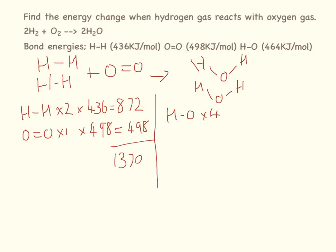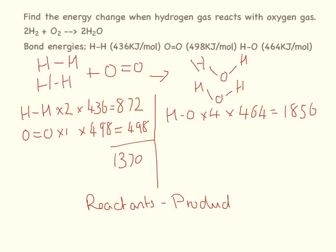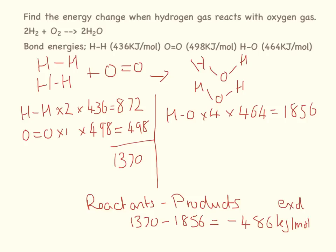Moving on to the product side: we have four O-H bonds with a bond energy of 464 kJ/mol, so 464 × 4 = 1,856 kJ/mol. Reactants minus products: 1,370 − 1,856 = −486 kJ/mol. Because that's negative, this reaction is exothermic.